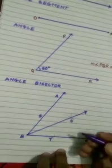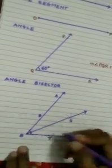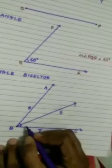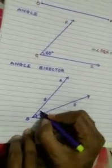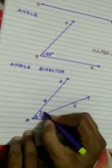So BO is the angle bisector of angle ABC. If angle ABC is 60 degrees, the angle bisector divides this angle exactly into two equal parts, that is 30 degrees each.